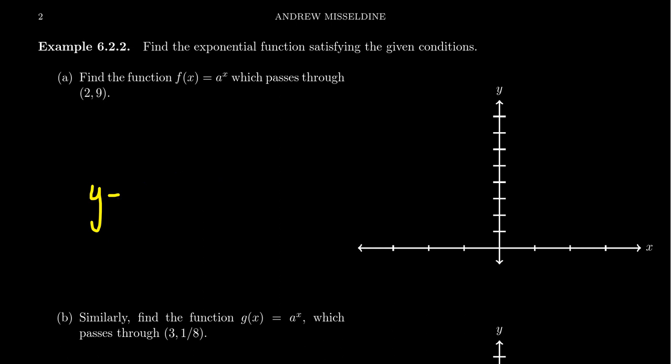We want to kind of reverse this process now. Let's not come up with the equation and see what the graph looks like. What if we know what the graph looks like? Can we come up with an equation? So let's suppose we have an exponential function with no transformations in it whatsoever. It's just f of x equals a to the x. How do we determine what the base is supposed to be? Well, if we know a point, like say it goes through the points 2 comma 9,